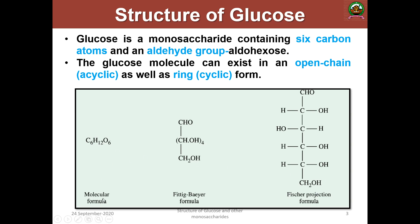The molecular formula of glucose is C6H12O6. In the fitting Baeyer's formula: the aldehyde group CHO at carbon 1, then CHOH four times, then CH2OH at carbon 6. This gives six carbons total. This is known as the fitting Baeyer's formula, and it is an abbreviated projection formula.